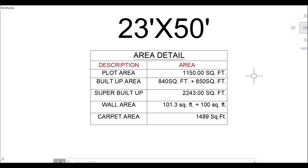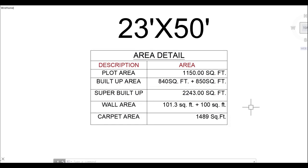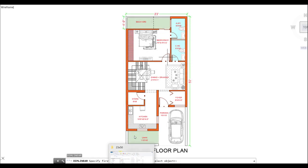The total floor of construction is called the super built-up area. The fourth element is the wall area. When you minus the wall area from the built-up area, you get the carpet area. Now let's come to the ground floor as you can see on the screen.